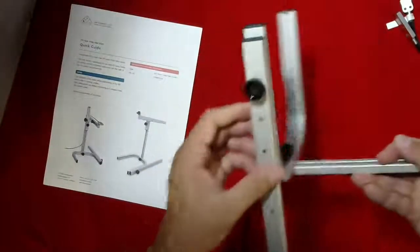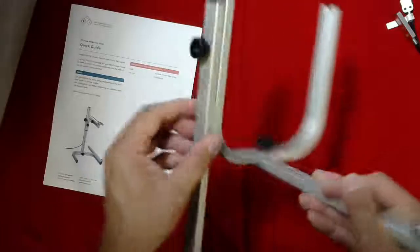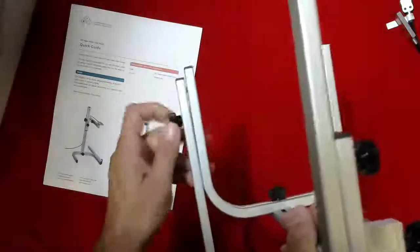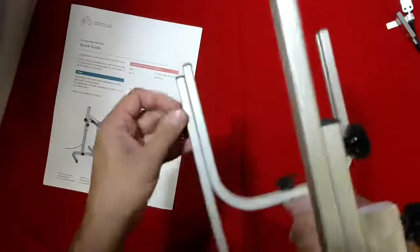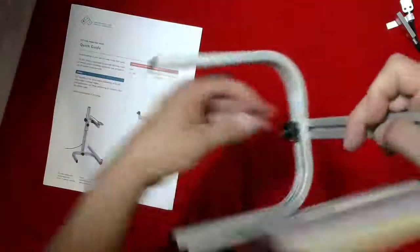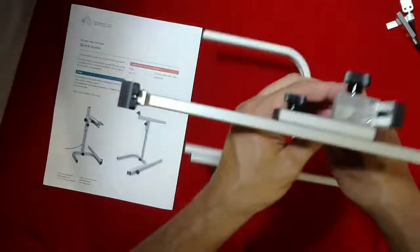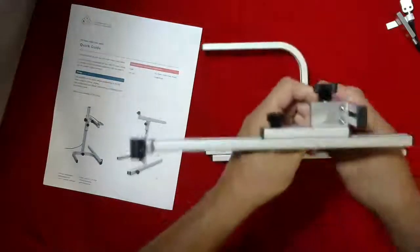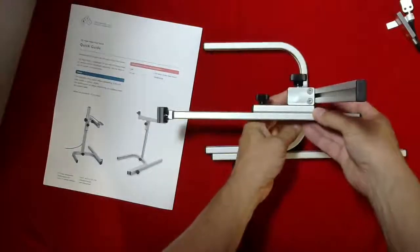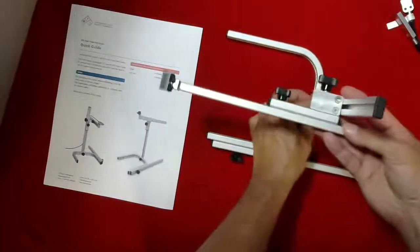There are adjustments to it. You have a thumb screw here that allows you to adjust the position and move this bar. This particular one is set at the base. This one here adjusts the arm up and down so you can slide it.